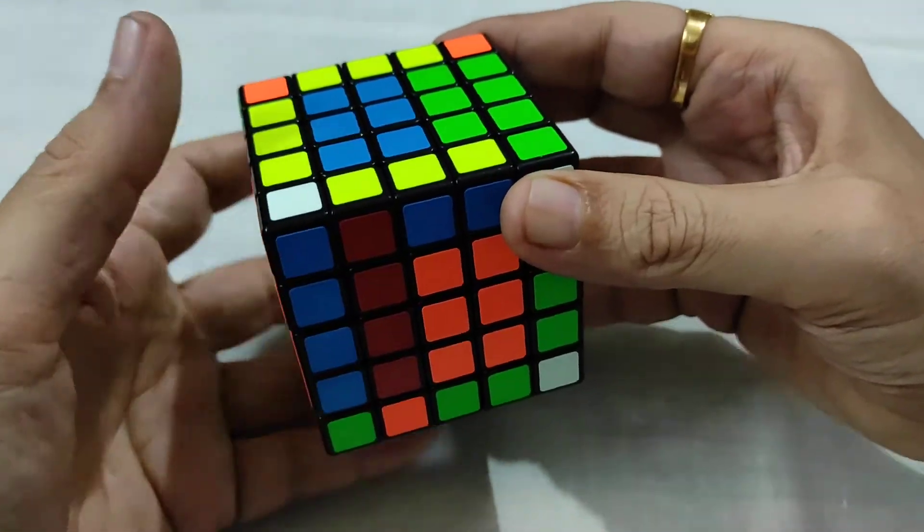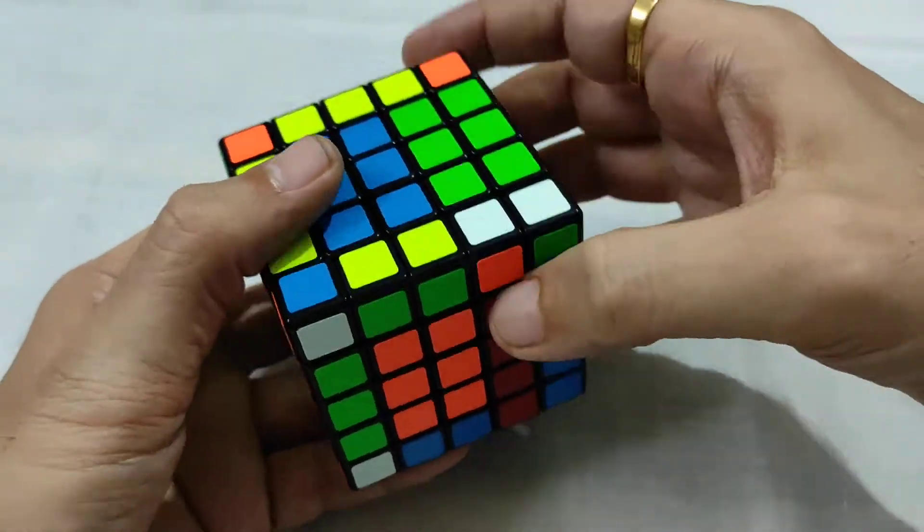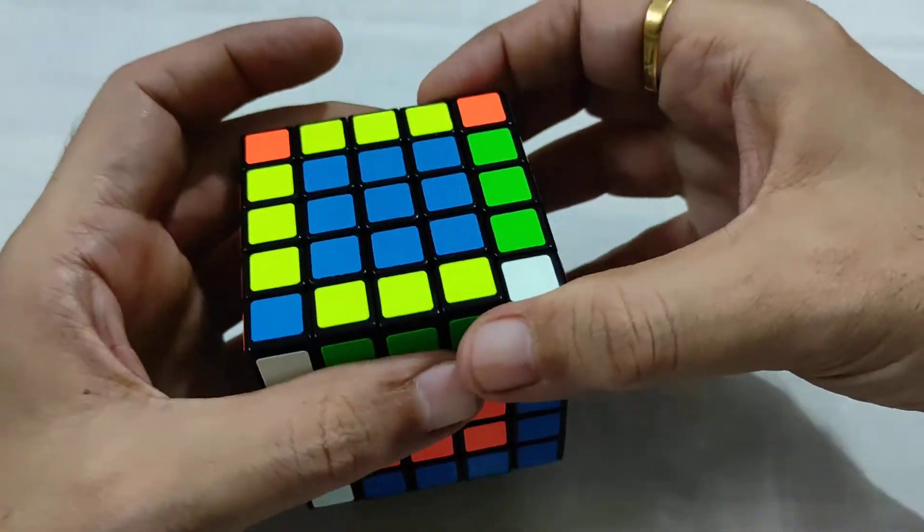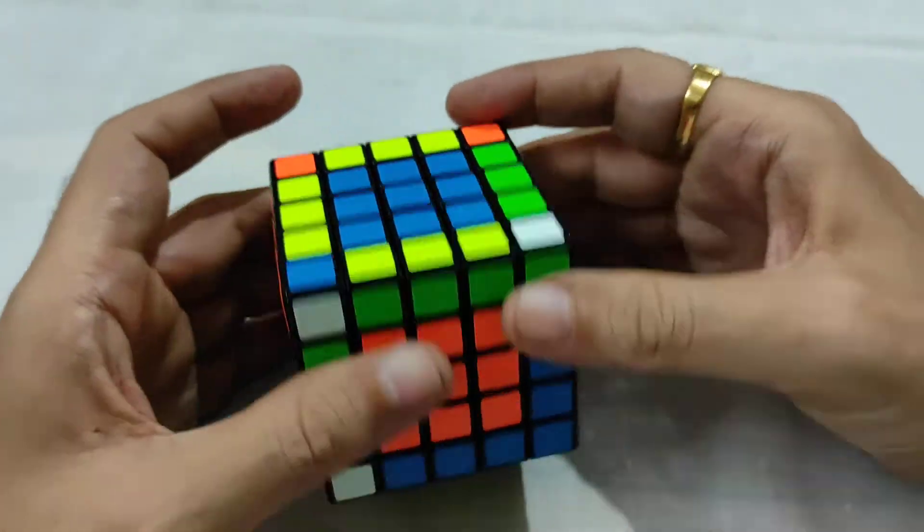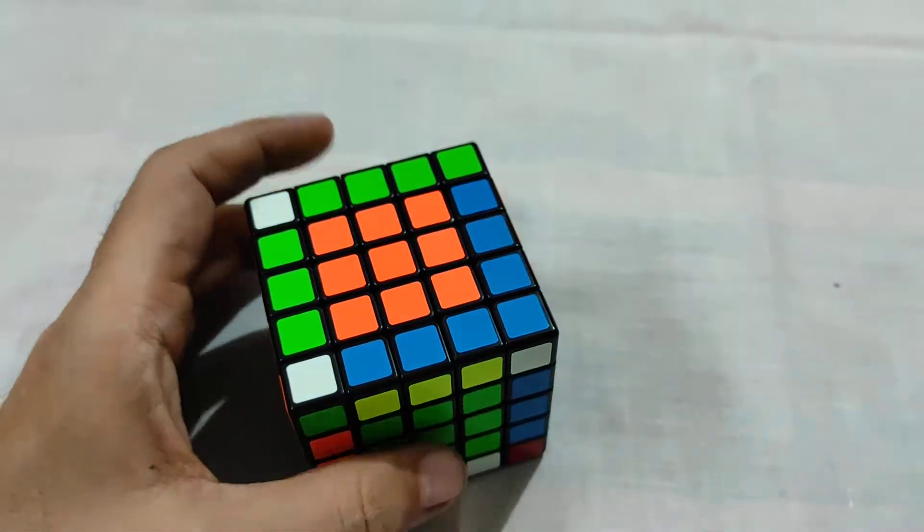Okay, now 2F and 2R. And now you can see it is flipped and the edge pieces are solved.